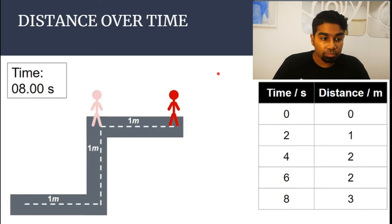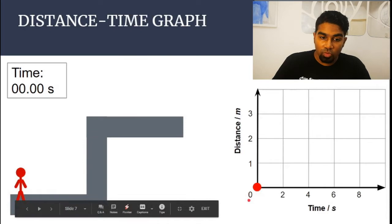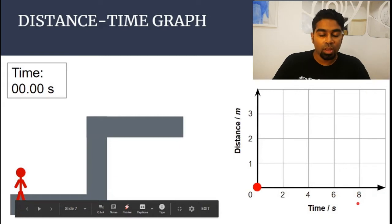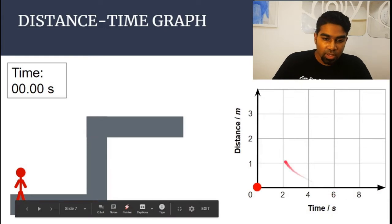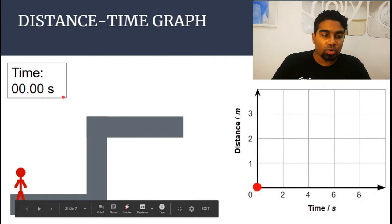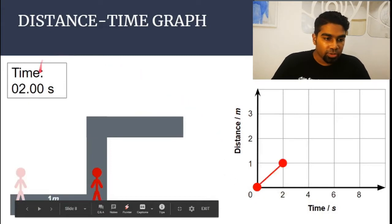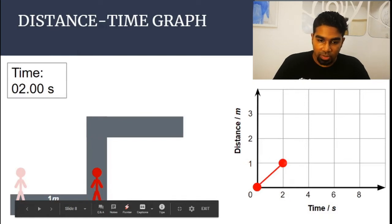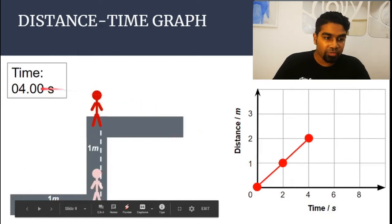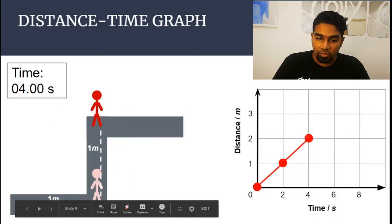Now let's look at how to graph it. The y-axis is distance and the x-axis is time — this is almost always the case unless there's a specific reason to switch it. So at the beginning, time is zero and distance is zero. At two seconds he has moved one meter, so we plot a point at two seconds and one meter. At four seconds he has moved a total of two meters, so we plot a point at four seconds and two meters.